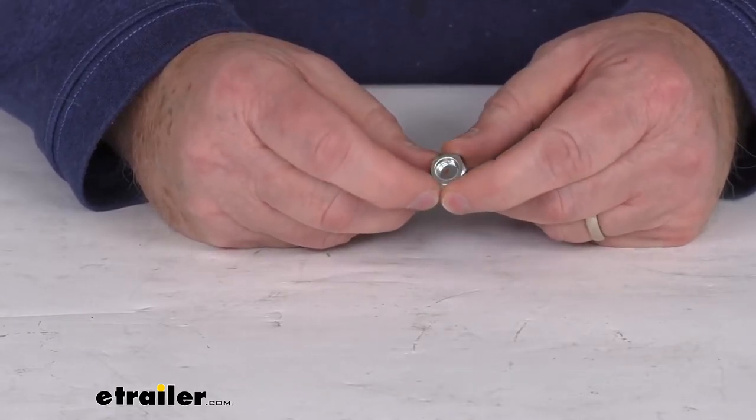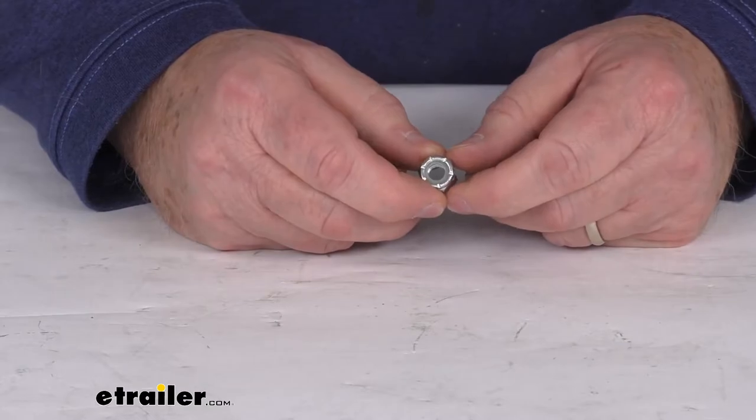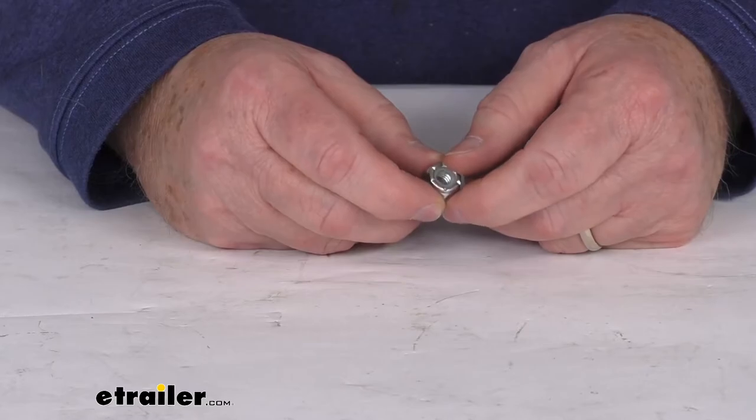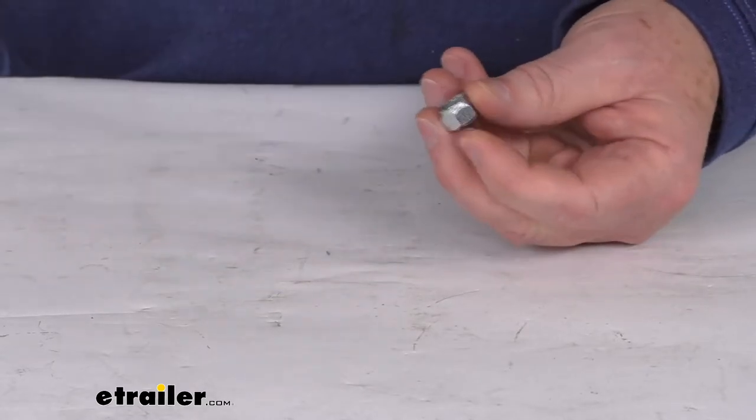This does have a nice zinc plating on it for corrosion resistance. Again the diameter of this is 5 sixteenths of an inch. Threads per inch is 18 threads per inch. The head size is a half an inch.